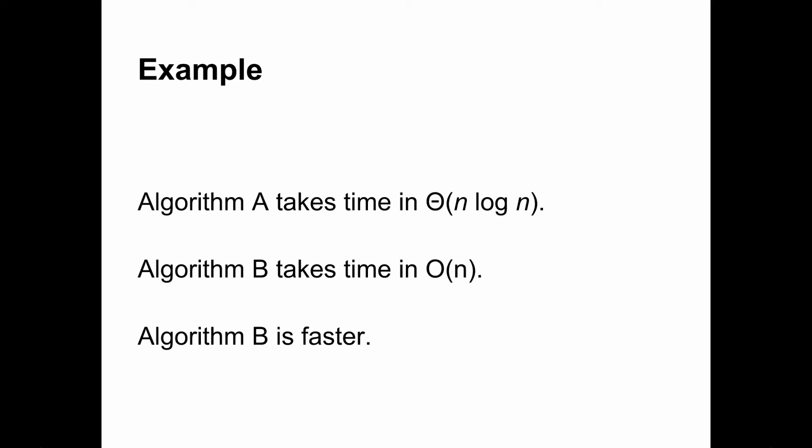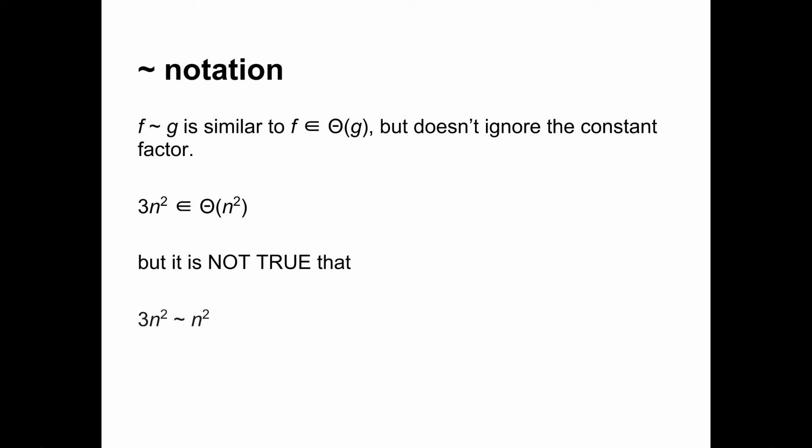Most authors use a combination of these notations, but some, notably Sedgwick and Wayne, prefer tilde notation. This notation both allows and requires us to be more precise. Writing f tilde g is similar to saying f is in big theta of g, but it doesn't ignore the constant factor. 3n squared is in big theta of n squared, but it is not true that 3n squared tilde n squared, because 3n squared grows three times as fast.